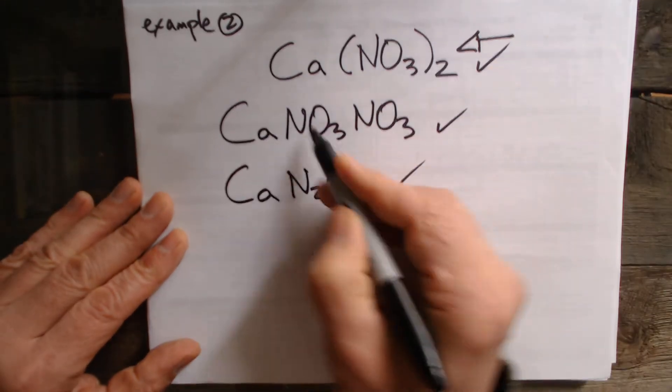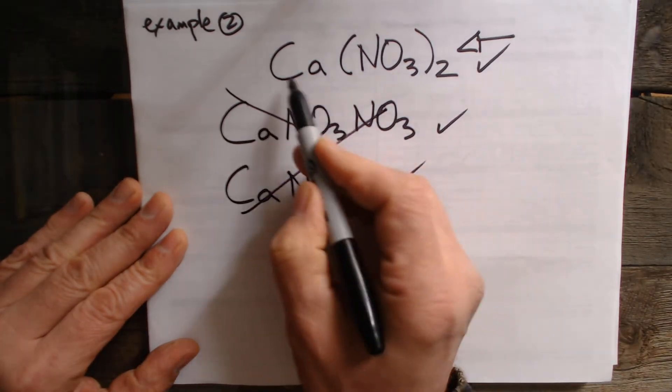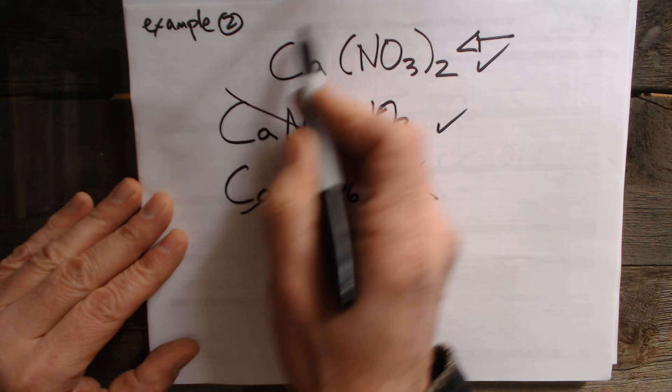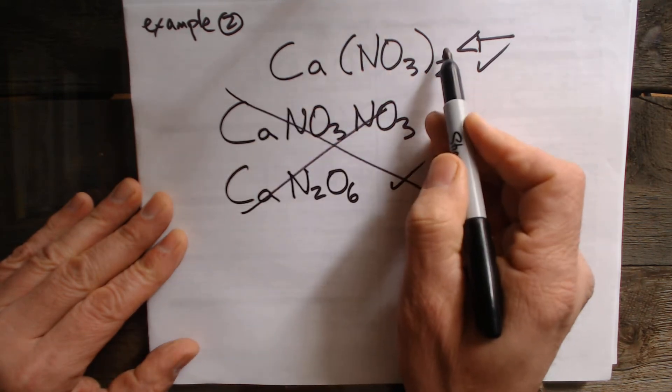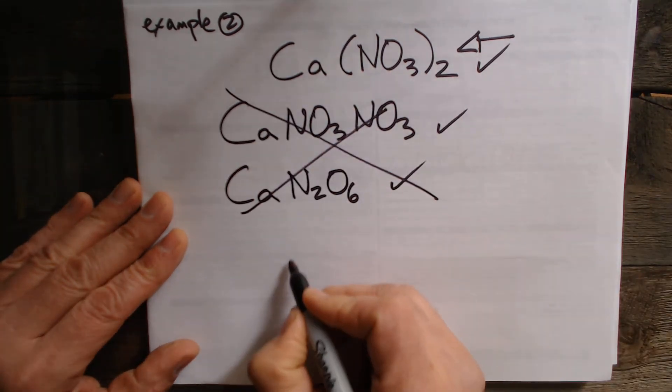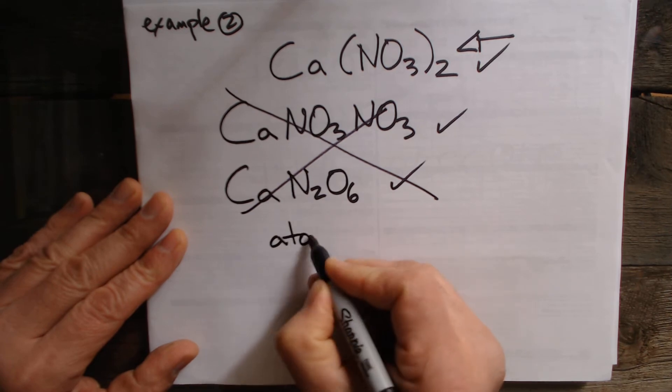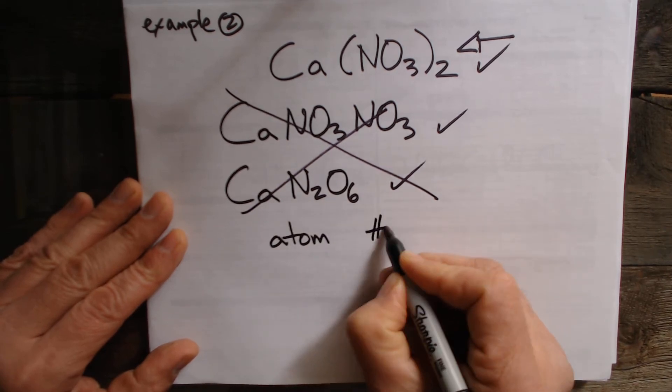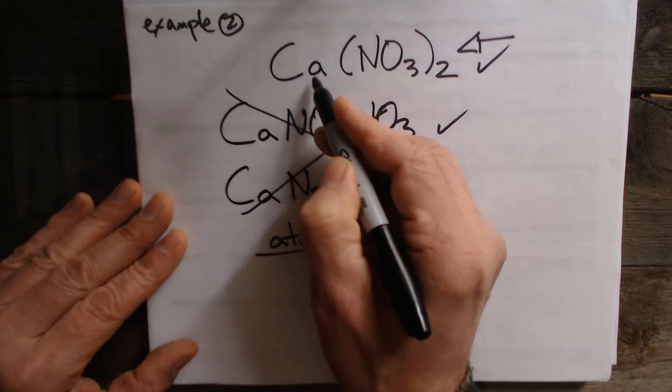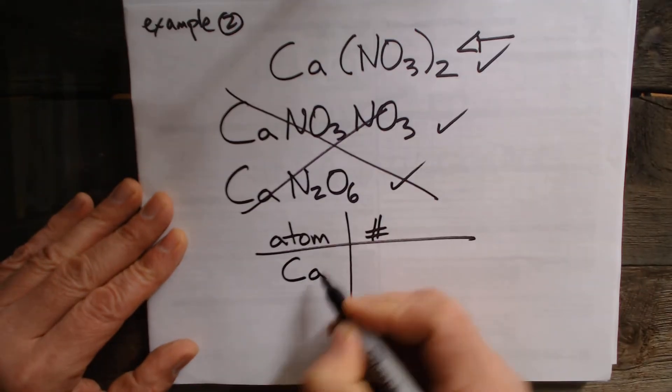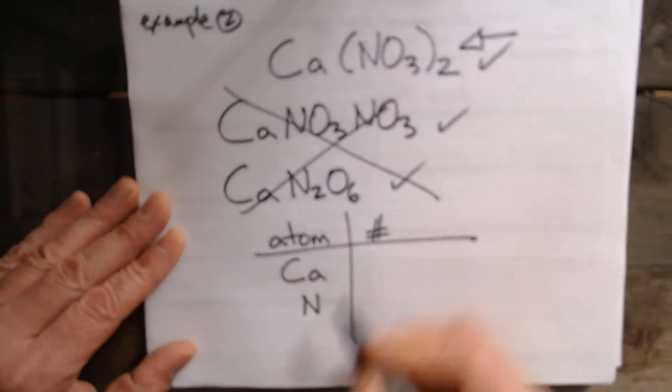But for right now let's figure out how do you figure out the number of atoms of each element are in this. So you make that table. So you got your atom and you got your number and there's Ca calcium. There's an N and there's an O.